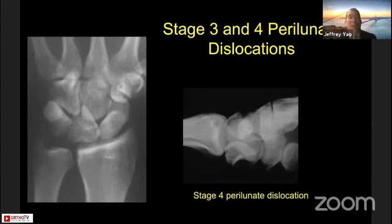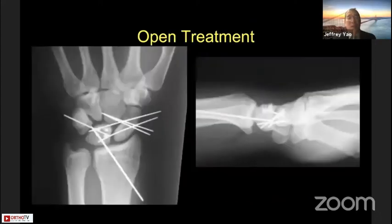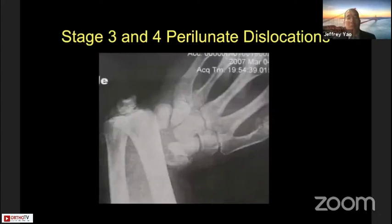For greater stage injuries, there is still a role for open treatment. Here is a Stage 4 perilunate fixed with a combined approach using ligament suture anchors to repair both the scapholunate and lunotriquetral ligaments, with temporary pinning of all bones for approximately eight weeks.